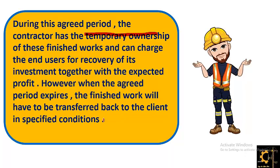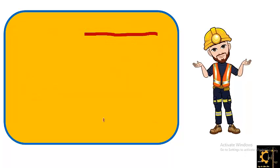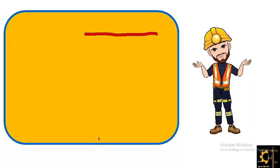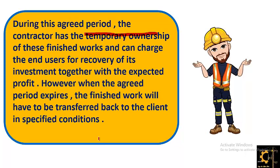However, when the agreed period expires, the finished work must be transferred back to the client in specified conditions. For example, if the completion period is 10 years and the contractor finishes in five years, he has five years of ownership to generate profit — such as renting out a residential building. At the end of the agreed period, whether 10 or 20 years, he must hand over the project to the client in specified conditions.